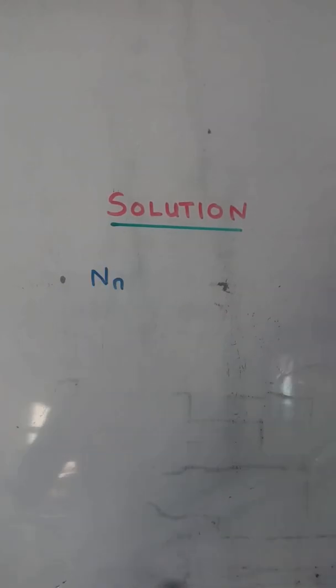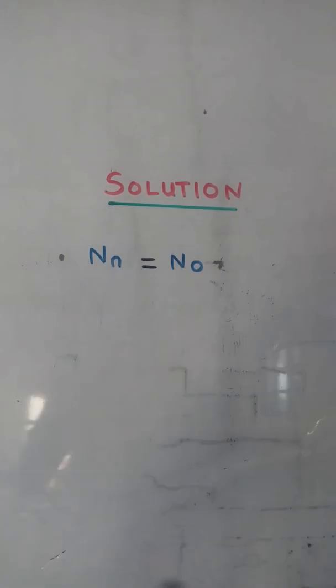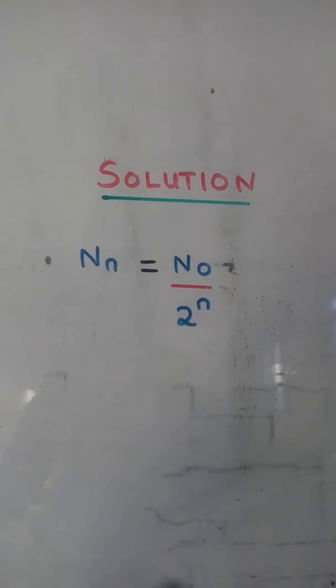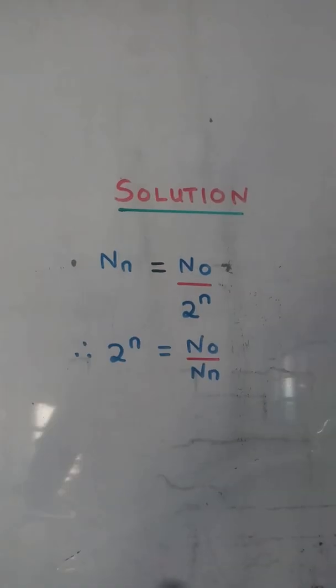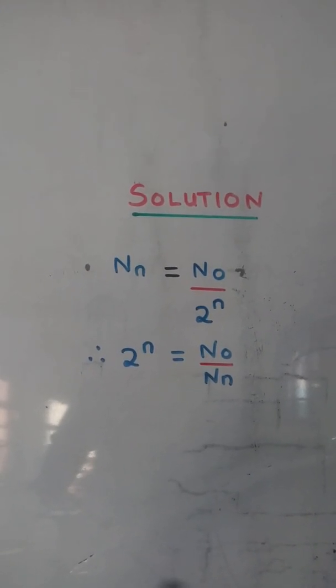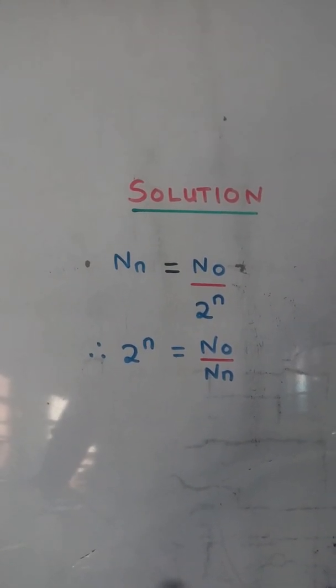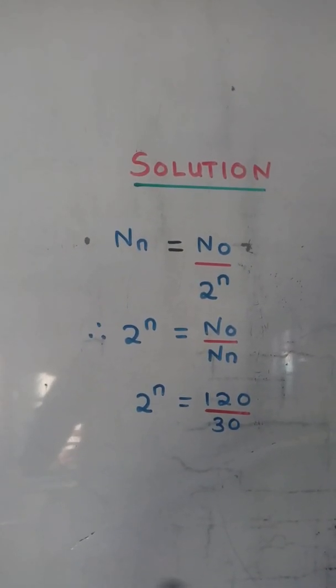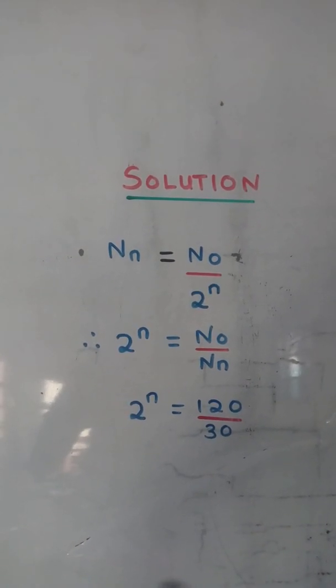Solution: Number of nuclei remain is equal to number of nuclei present over 2 raised to number of half-lives. Therefore, 2ⁿ is equal to N₀ over Nₙ. 2ⁿ is equal to 120 over 30.